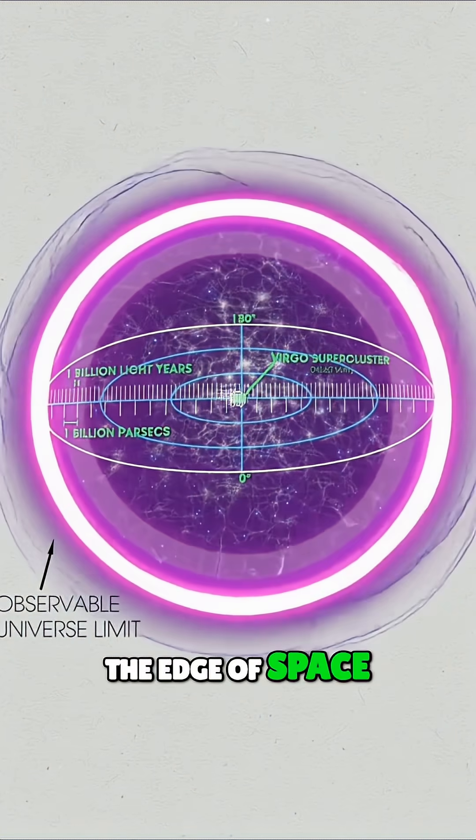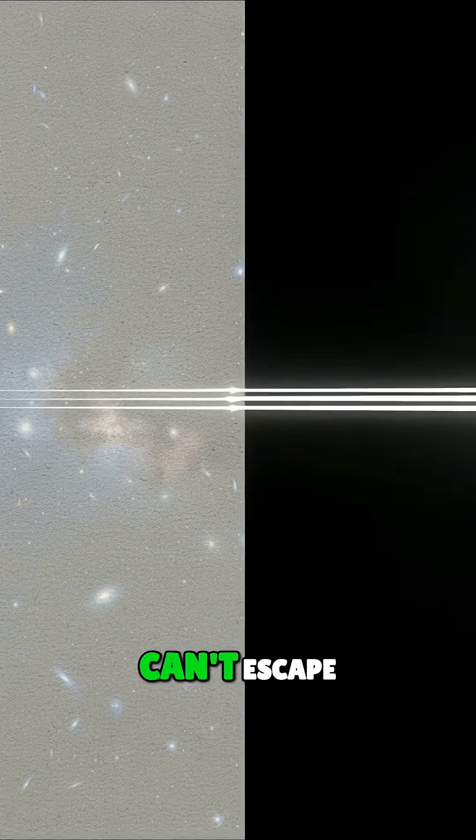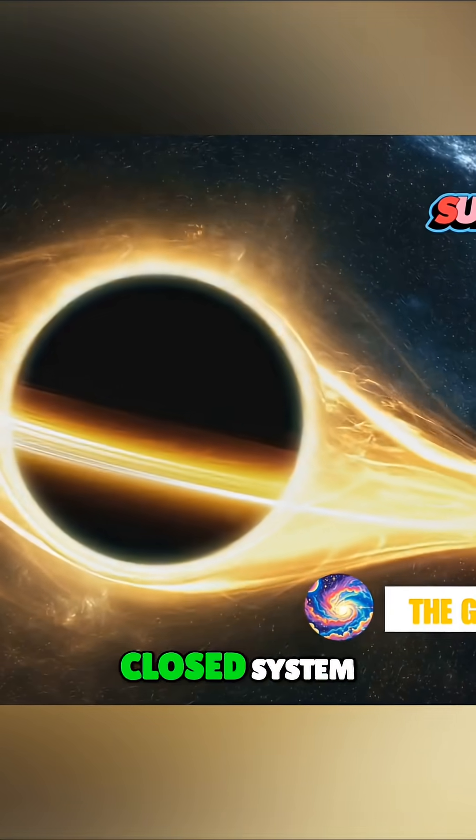So, the edge of space might actually be an event horizon. It acts as a one-way boundary where light can't escape, trapping us inside a closed system.